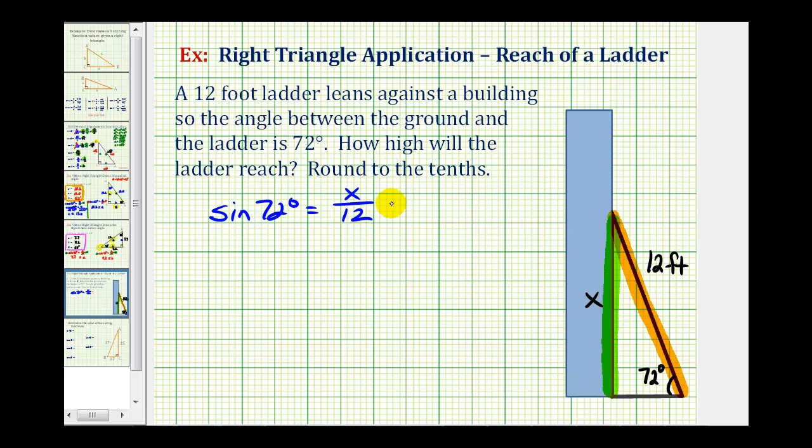So to solve for x, we'll multiply both sides by 12. Notice this simplifies to one, so we just have x on the right side.